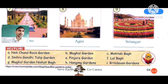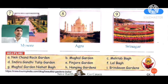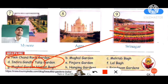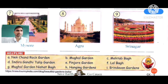In Srinagar there is a very beautiful garden with circular flowers you can see in the picture. It is situated in a very cold region. For number nine, the answer is option D — Indira Gandhi Tulip Garden. Tulip flowers are used here, and some rose flowers can also be seen. I hope you understood this chapter very well.